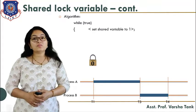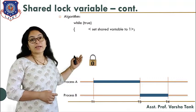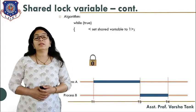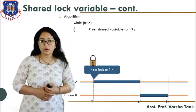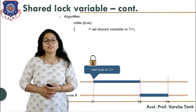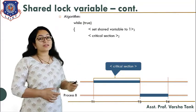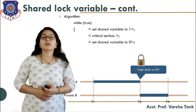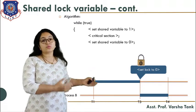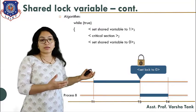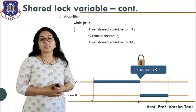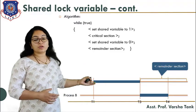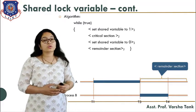In the algorithm, while true — meaning the process wants to enter the critical section — process A checks that the lock variable is zero, then sets it to one so no other process can access the critical section. The process is in the critical section executing its task. After completing execution, it sets lock back to zero so other processes can access the critical section. At time T3, process B checks lock, finds it zero, and uses the critical section by setting lock to one. The remainder section is for process A since it no longer needs the critical section.